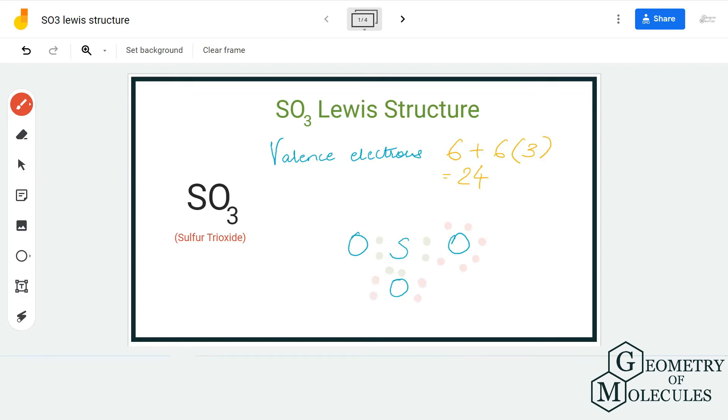To balance it off, start arranging these electrons around oxygen atoms so that they can have complete octets. Doing that, you'll have this kind of structure in which sulfur will have only six valence electrons in its outer shell, whereas all the oxygen atoms will have complete octets.